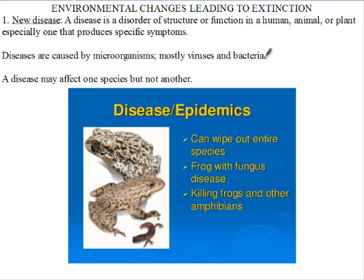Diseases are caused by microorganisms, mostly viruses and bacteria. When we say an organism is a microorganism, that means it can only be seen with the help of a microscope due to that organism's very small nature. The smallest types of microorganisms are viruses. Bacteria are much bigger than viruses.